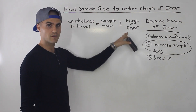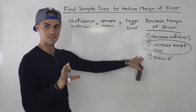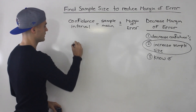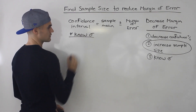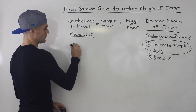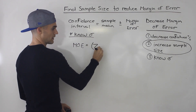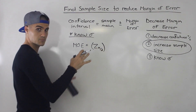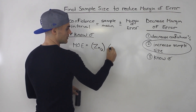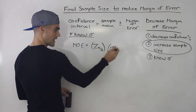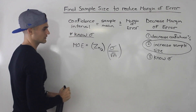Now, to get that margin of error, it depends on whether you know the population standard deviation or not. If you know it, you're going to use the z distribution. If you don't know, use the t distribution. So let's assume that we know the population standard deviation. Then the margin of error is going to be the z value at alpha over 2 — because it's a two-tailed probability for a confidence interval — multiplied by the population standard deviation over the square root of n.